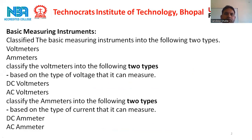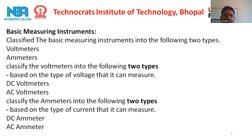In this slide, there is the mention about the basic measuring instruments. The basic measuring instruments are classified into two types: the first one is the voltmeter and the second one is the ammeter. Voltmeter and ammeter are classified on the basis of the voltage or current that can be measured. The voltmeter is classified into two types: DC voltmeter and AC voltmeter. The ammeter is classified into two types: DC ammeter and AC ammeter.